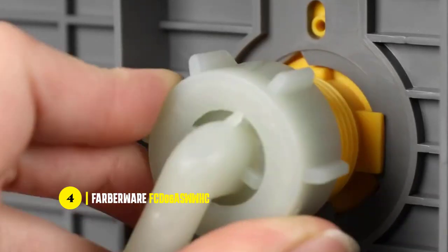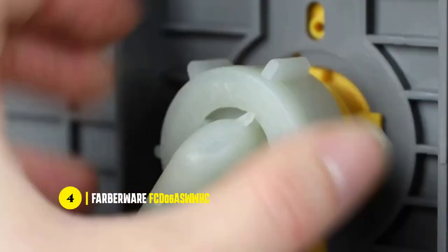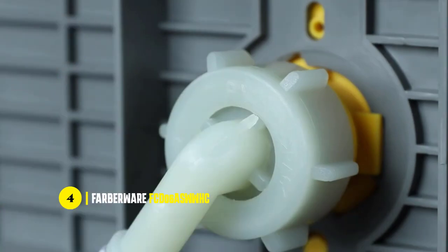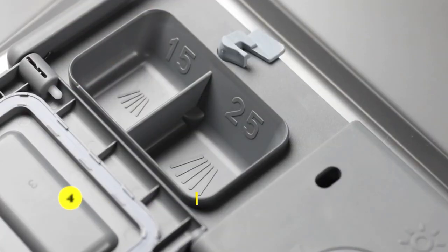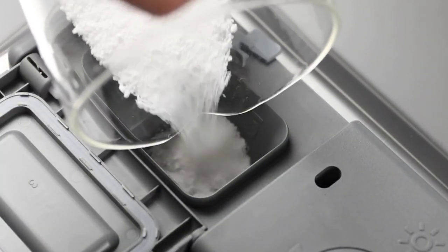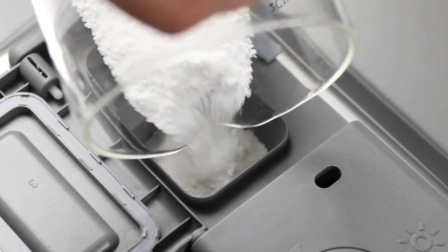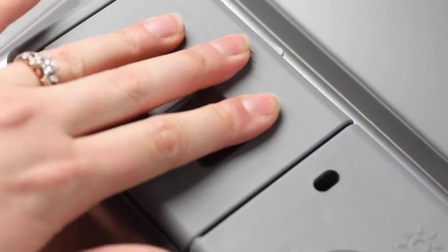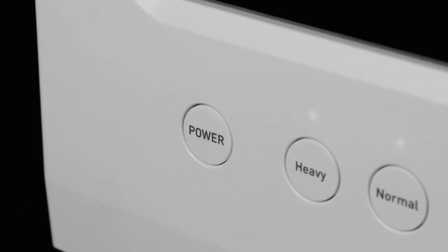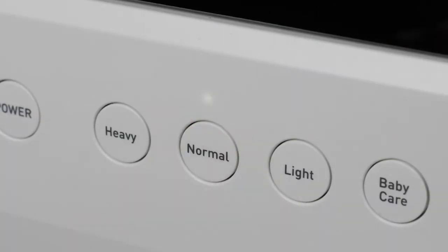One of the standout features of this dishwasher is its compact design, which makes it easy to install and use. The quick-connect assembly comes with accessories and adapters that make it simple to connect directly to your faucet, and the folding-down rack shelves and cutlery basket offer plenty of space for washing dishes up to 10 inches in diameter.